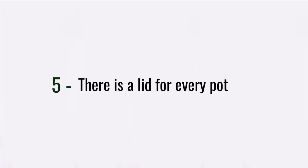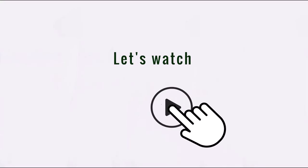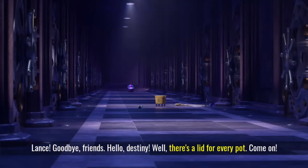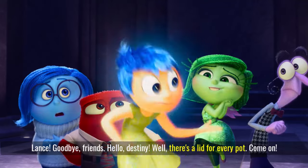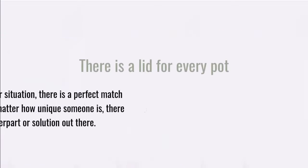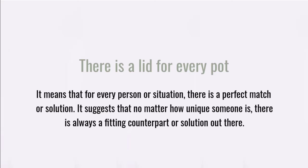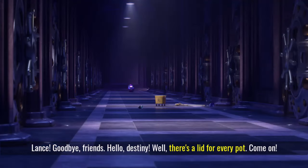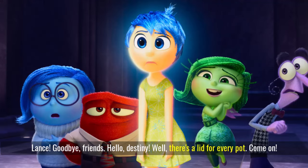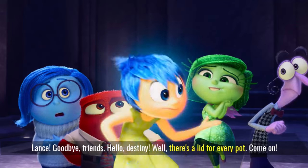Number 5: There is a lid for every pot. Let's watch! 'Goodbye, friends. Hello, destiny.' 'Well, there's a lid for every pot. Come on.' There's a lid for every pot means that for every person or situation, there is a perfect match or solution. It suggests that no matter how unique someone is, there's always a fitting counterpart or solution out there.